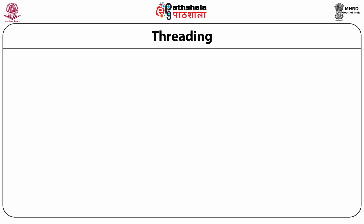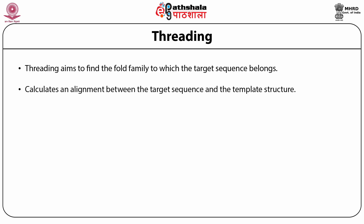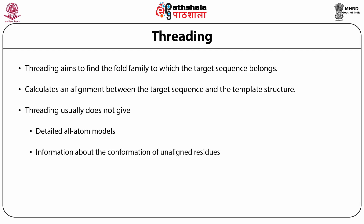In the unfortunate situation where your target sequence doesn't have a template structure with high sequence identity for homology modeling, you can still extract some information using threading methods. What threading does is aim to find the fold family to which your target sequence belongs. It does not exactly predict the structure — it simply tells you the likely fold and provides an alignment between the target sequence and the template structure. Threading does not give a detailed all-atom model, does not give information about unaligned residues, and doesn't tell you anything about loop conformations.